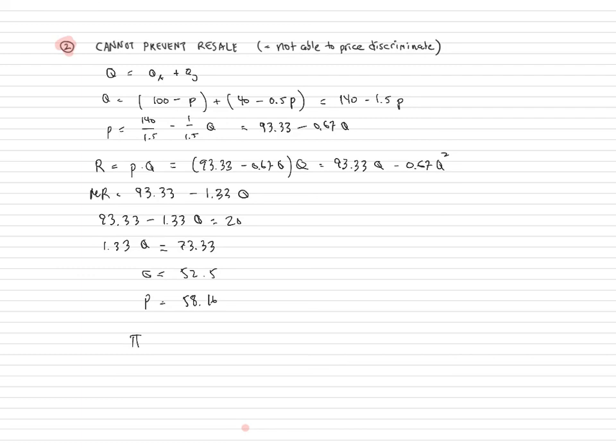Let me just calculate that. So that's going to be equal to 58.16. And therefore, the profit in the world, 58.16 minus 20 times 52.5, and that's going to be equal to 2003.14. All right. We double-check two things.